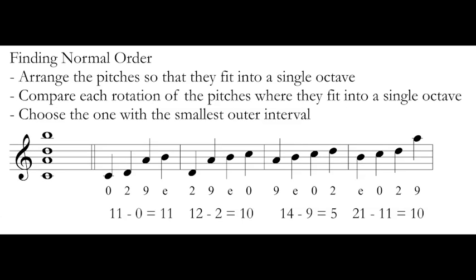Once we have these different rotations in front of us, we can choose the one that has the smallest outer interval. We want these things to be in the smallest space that they can possibly be. I subtracted the number for my first pitch class from the number from my last pitch class. In my first grouping, the outer interval was C to B, and that's an 11 pitch class interval, 11 half steps, pretty big.